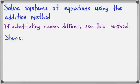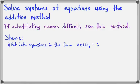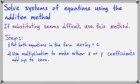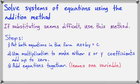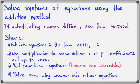Here are the steps. First, make sure both equations are in the form ax plus by equals c — the x and the y on one side of the equal sign, the constant on the other side. Next, use multiplication to make either the x coefficients or the y coefficients add up to zero. Third, add the equations together. Because either the x's or the y's have coefficients that add up to zero, one variable will cancel out, leaving an equation with only one variable. Solve that equation and plug the answer back into one of the original equations to find the other variable.